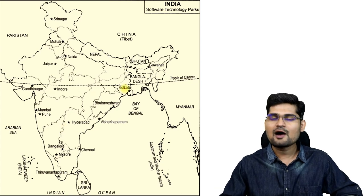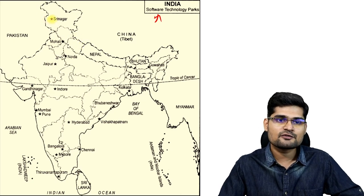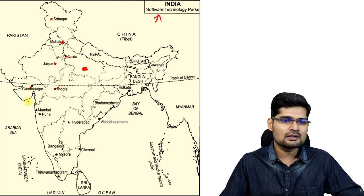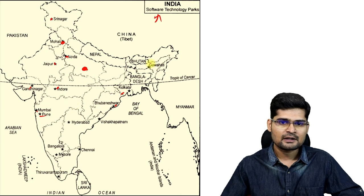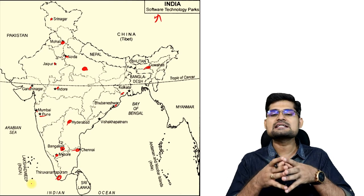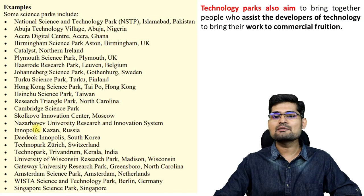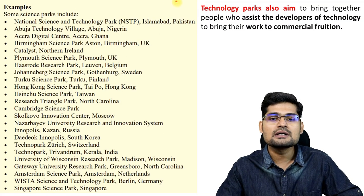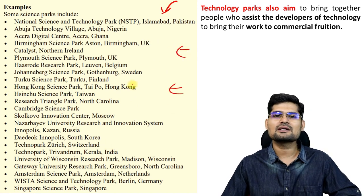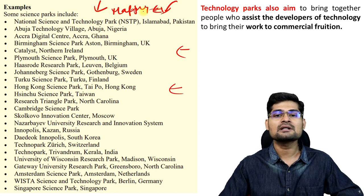Looking at India's map of technology parks — especially software technology parks — locations include Srinagar, Mohali, Noida, Jaipur, Kanpur, Indore, Gandhinagar, Mumbai, Pune, Bhubaneswar, Kolkata, Guwahati, Hyderabad, Bangalore, Chennai, Mysore, Thiruvananthapuram, and Visakhapatnam. You can pause the video here, learn about the world list given, and do mapping alongside the list — that would help in writing good answers.